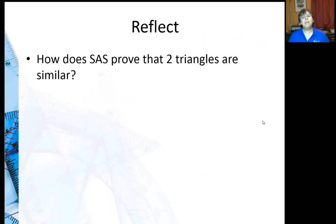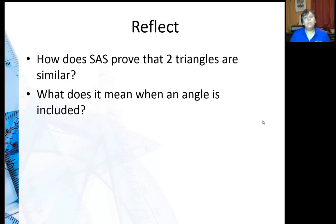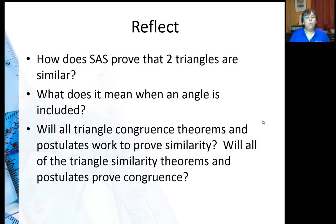So to reflect: How does side-angle-side prove that two triangles are similar? We really used inductive reasoning on our argument. What does it mean when an angle is included? That's very important. Remember, we did that in triangle congruence, and now we're using it in triangle similarity.